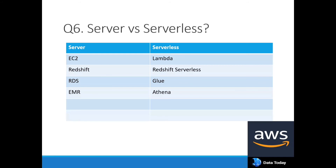Serverless services include Lambda for running and invoking scripts via Lambda functions. Redshift Serverless is managed by AWS — within minutes you can work with large-scale datasets without creating a cluster. Glue lets you create ETL jobs and a metadata catalog without managing infrastructure. Athena lets you read files from S3 directly. With all these serverless services, you do not need to worry about managing or creating clusters or instances.